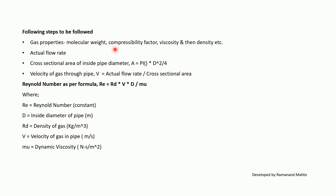Then calculate the actual flow rate. Next, calculate the cross-sectional area of the inside pipe diameter: A = π × D² / 4. Then calculate the velocity of gas through the pipe: V = actual flow rate / cross-sectional area.